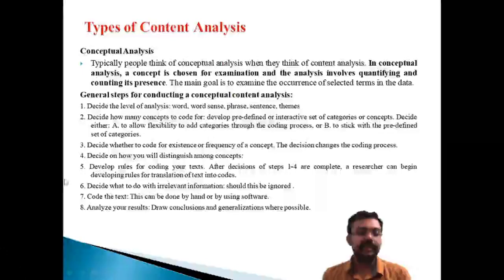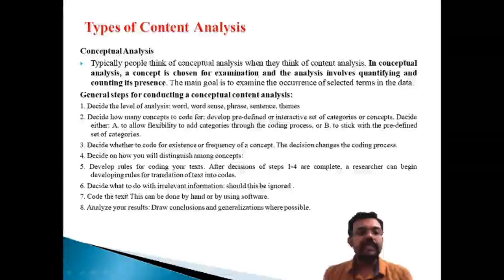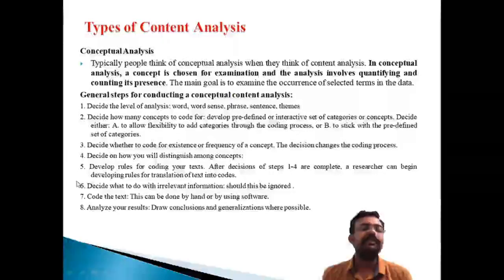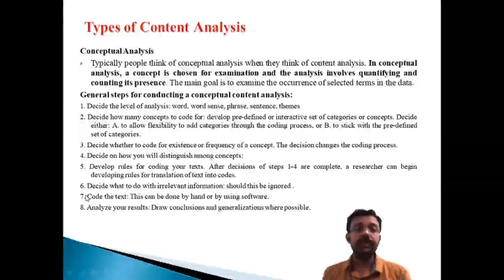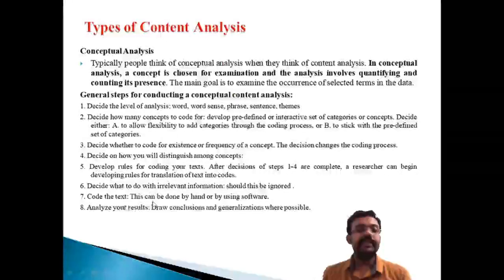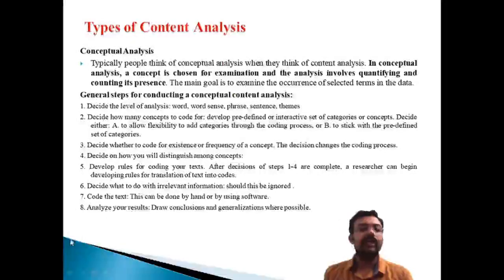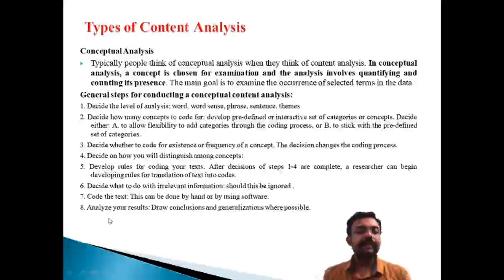The sixth step is to decide what to do with irrelevant information — irrelevant information should be ignored. Try to ignore the information that does not relate to the concepts being studied. The seventh step is to code the text — this can be done by hand or using software. The eighth and final step is to analyze the results, draw conclusions, and make generalizations.